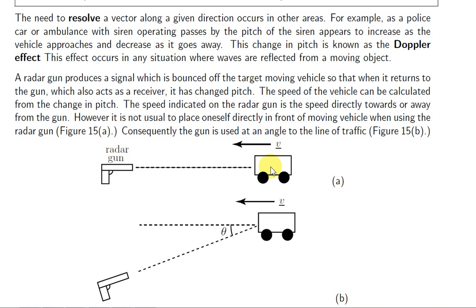A radar gun sends a signal towards a moving vehicle. The rebounding signal will have a different frequency because the vehicle is moving towards the radar gun. Well, it could be towards or away, it doesn't matter. It's the change in frequency or pitch of the signal that is used to calculate the speed of the moving vehicle.